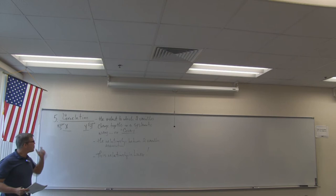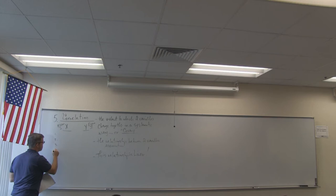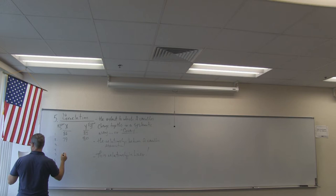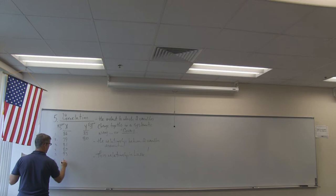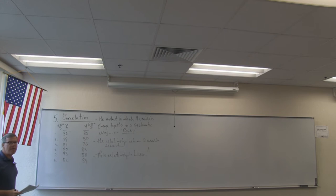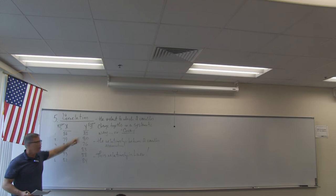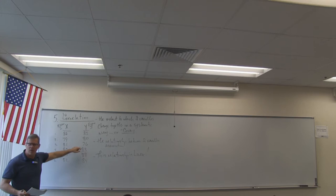Let's suppose we have six students. Student one scores 86 on exam one and 85 on exam two. Student two scores 79 on exam one, 80 on exam two, and so on. We have a bivariate data set, and upon inspection, these numbers are pretty similar. If we had an exam one score of 86 and exam two of 13, or exam one of 81 and exam two of 47, they would not be similar.